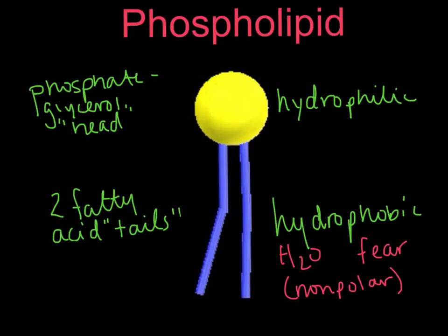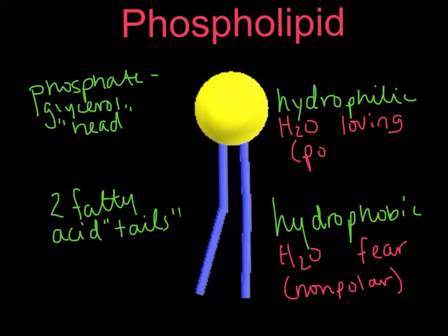Hydrophilic, as you can imagine, is kind of the opposite — water loving. So these are things that like water. The phosphate glycerol head up here likes to interact with water. Something that is hydrophilic is often polar. So the head of the phospholipid likes water, the tails don't, and this gives us some different formations that phospholipids tend to arrange themselves into.